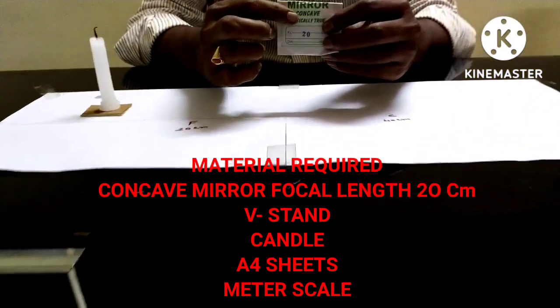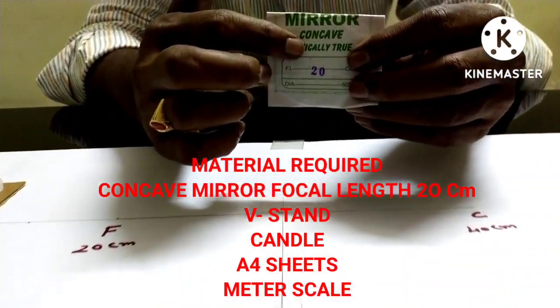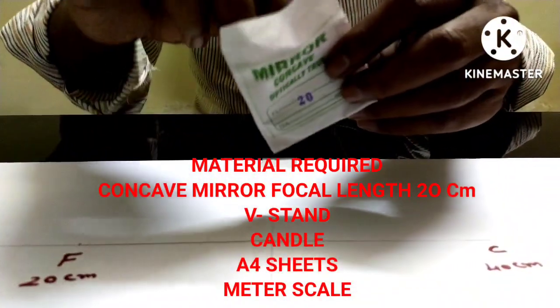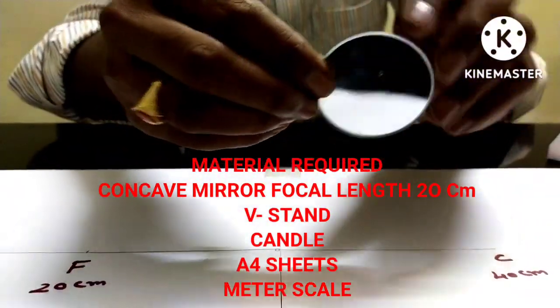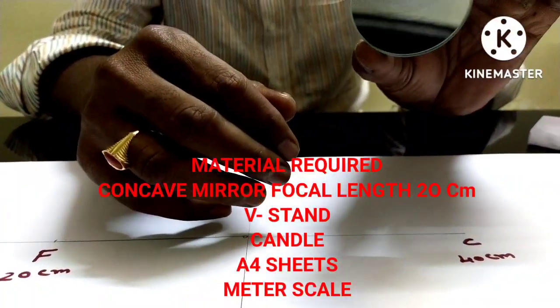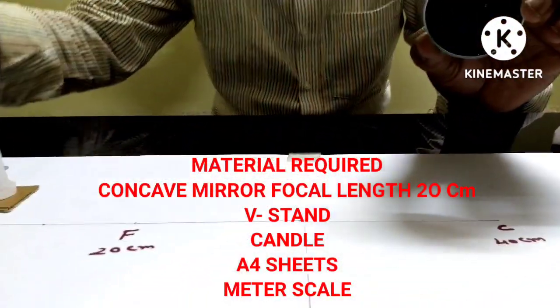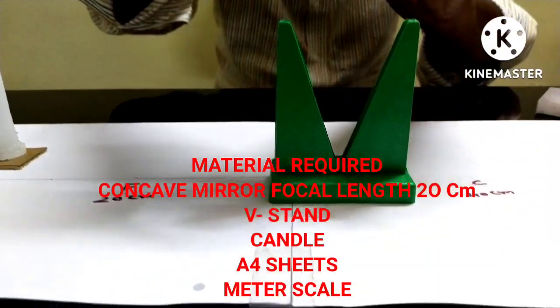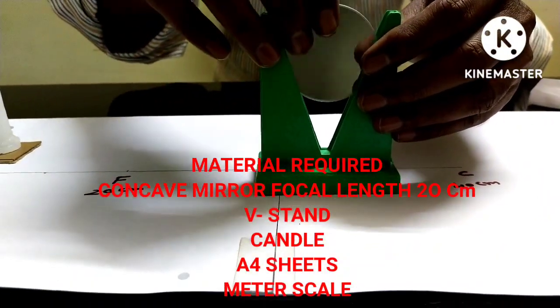It is a concave mirror of focal length 20 cm. See the reflecting surface. It is bent inwards. V stand. Concave mirror kept on V stand.